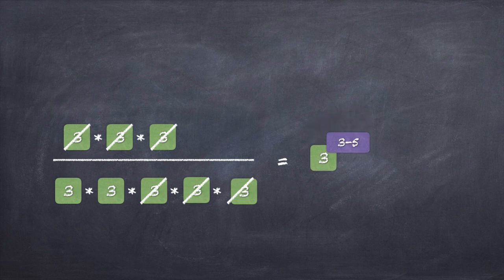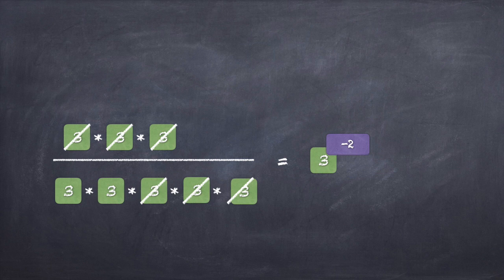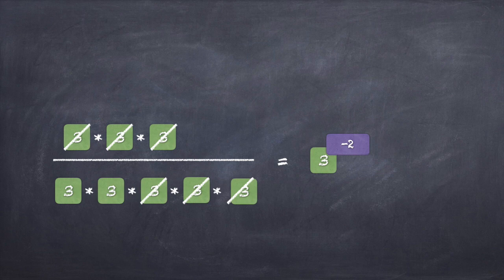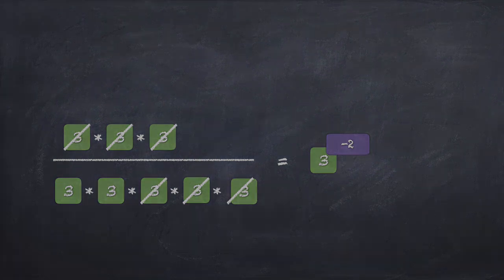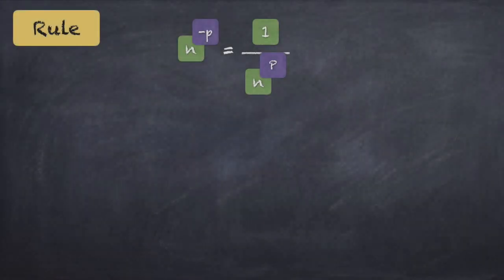If I use the formula, 3 raised to 3 divided by 3 raised to 5 is going to be 3 raised to 3 minus 5. So 3 minus 5 is going to give me minus 2, meaning I get the result as 3 raised to minus 2 on the right-hand side. On the left-hand side I can see that it is 1 in the numerator and 3 squared in the denominator. So I can see that 3 raised to minus 2 is nothing but 1 upon 3 squared. That is going to be our next law.